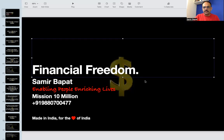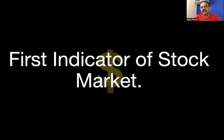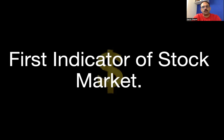Welcome to Financial Freedom. My name is Samir Bapat and today is day 12 of our complete course on stock market. What we are going to learn is the first indicator of stock market by the Western world. This is the first indicator used by the Western world in stock market. It was developed somewhere around 130 years ago, around 1900, and we will go through different phases of this indicator.